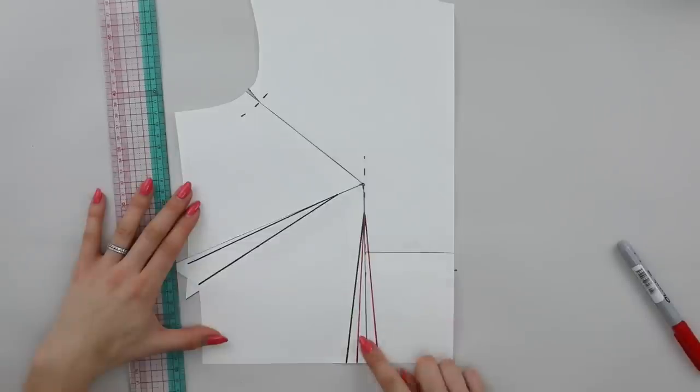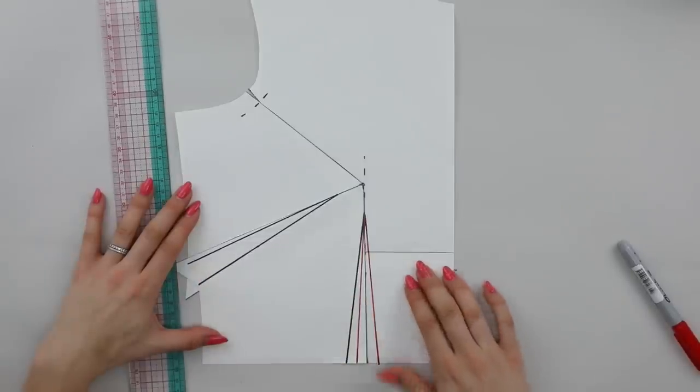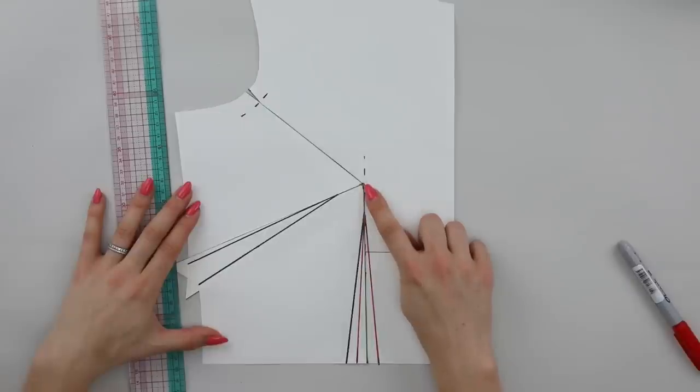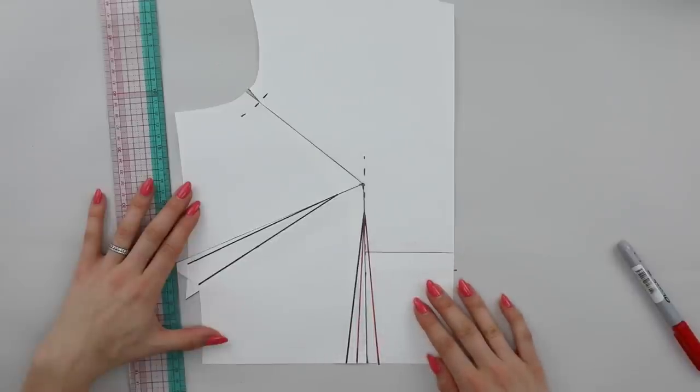You'll finally need to true both the waist dart and the side dart, and then I would make a test garment, check that the bust apex is in the right place for you and that both the waist dart and the side dart are finishing in the right place for your individual bust and bust apex.